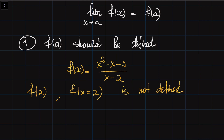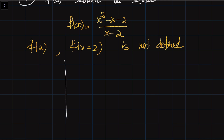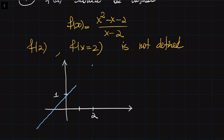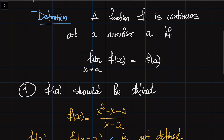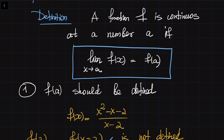There is no value of this function at x equal to 2. If you sketch the graph of this function, it looks like a line passing through the point, but when it reaches x equal to 2, there is simply no value — the function is not defined at that point. This is a counterexample where the function is not defined, violating the first implication: the function must be defined at the point.